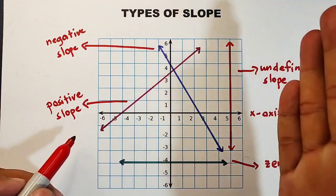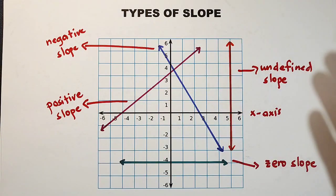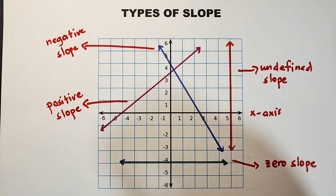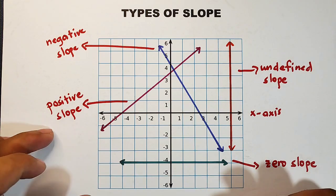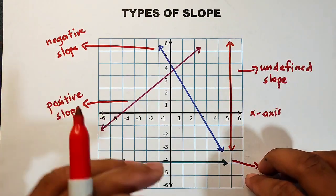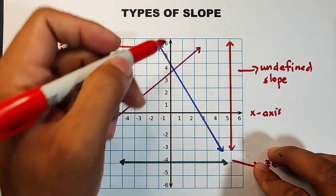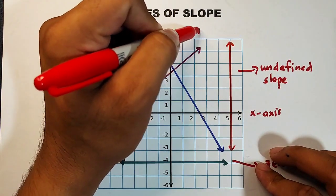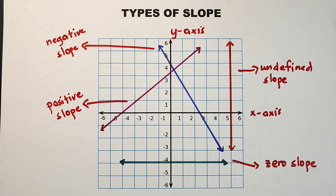We also have undefined slope. When you encounter this kind of line and calculate the slope, it is automatically undefined — it has no value. This happens because the run is equal to zero, making the denominator zero. So these are the four types of slope: positive slope, negative slope, zero slope, and undefined slope. The undefined slope occurs when the line is parallel to the y-axis.